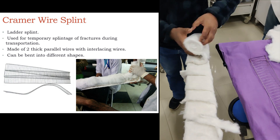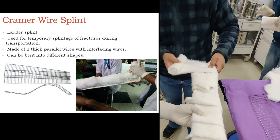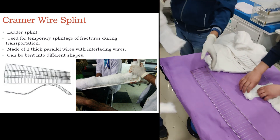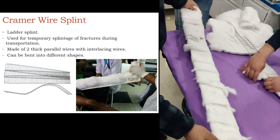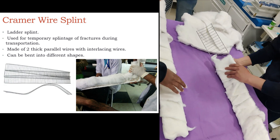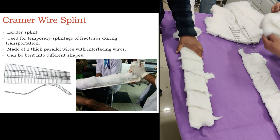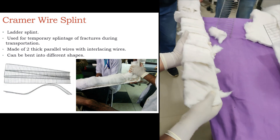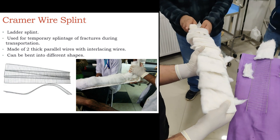As you can see in the video, it is made up of two thick parallel wires with interlacing wires. The important thing about this crammer wire splint is that it can be molded into any shape.